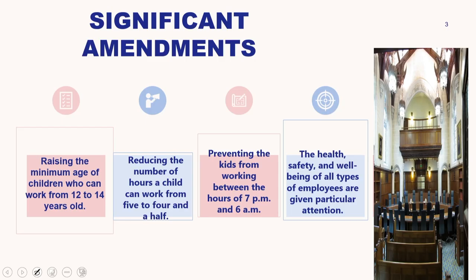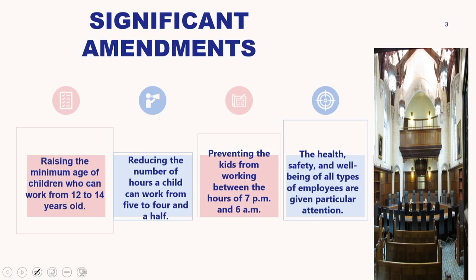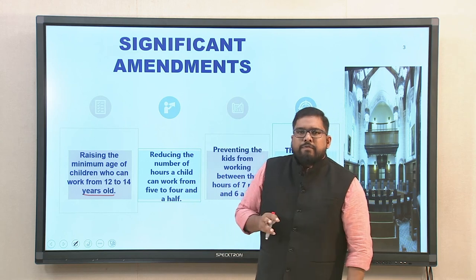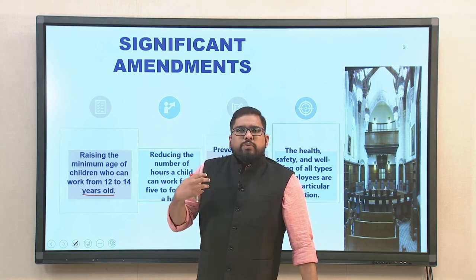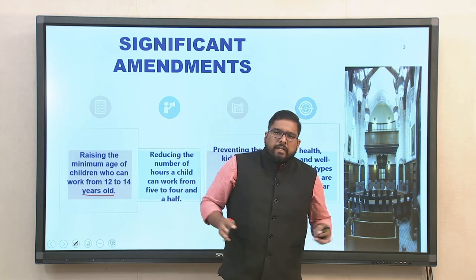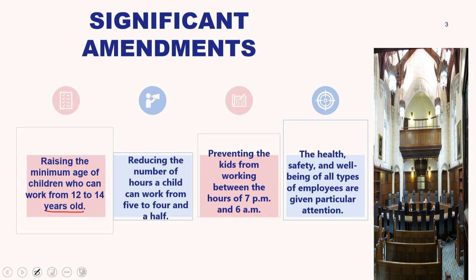When we look into the act, there are certain significant amendments that pertain to welfare. The first and foremost is raising the minimum age of children who can work from 12 to 14 years old. When a large number of children were forced into the workforce, acts like the Factories Act gave a certain remedy to that pertinent problem that existed in the Indian workforce. So this was the first and foremost thing the Factories Act did — raising the minimum age from 12 to 14 years old.